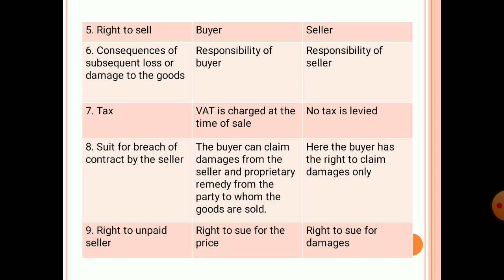Sixth is the consequence of subsequent loss or damage to the goods: in sale, it is the responsibility of the buyer; in agreement to sell, it is the responsibility of the seller. Seventh is tax: VAT is charged at the time of sale; no tax is levied in agreement to sell.